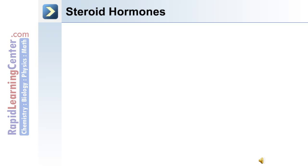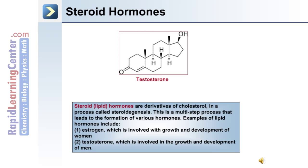The third major group of hormones are steroid hormones. These hormones are derivatives of cholesterol and are made through a process called steroidogenesis — a multi-step process that leads to the formation of various hormones. Examples of this class include estrogen, which is involved with growth and development of females, and testosterone, which is involved in the growth and development of males.